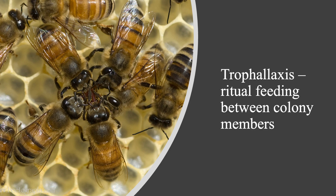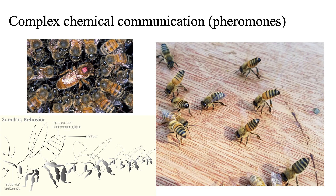Another characteristic is complex chemical communication. In honeybees, we see the scenting behavior where workers lift their abdomen to release the Nasonov pheromone, which acts as a homing signal for foragers or a returning queen after a mating flight. We also know about the queen's retinue pheromones, which produce a whole host of different responses in workers and colony members.